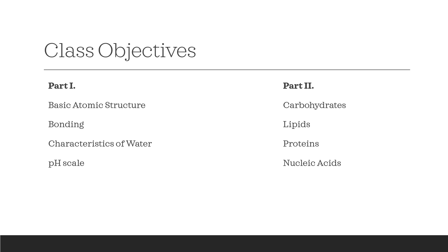Before we begin, let's take a look at what this lesson includes. I divided this lesson into two videos, where at this stage we will discuss basic atomic structure, bonding, characteristics of water and the pH scale. And already in the second part we will dwell in more detail on the four main types of macromolecules — carbohydrates, fats, proteins and nucleic acids, DNA and RNA.